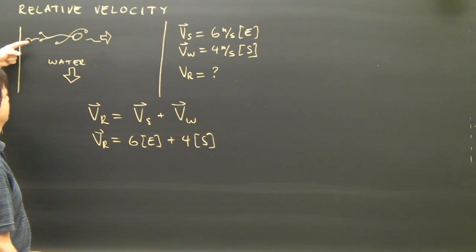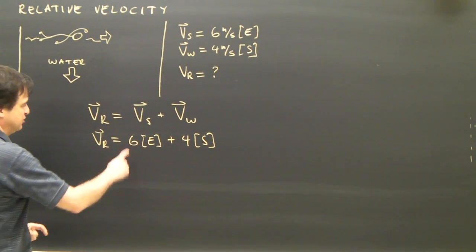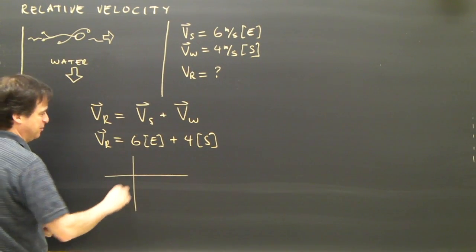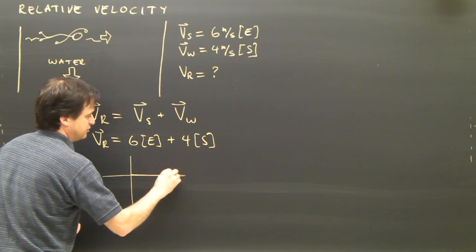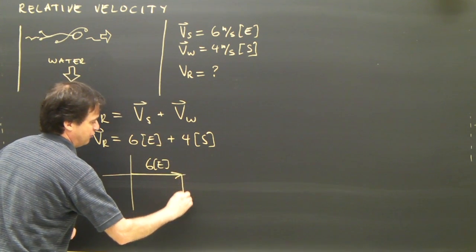So 6 east plus 4 south is going to give me my result. And I can already sort of predict. If I'm swimming that way and the water is going that way, I should expect to end up going this way. So let's take a look.